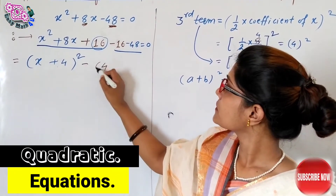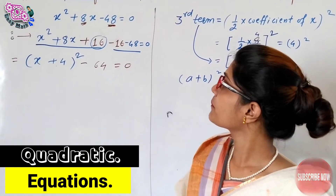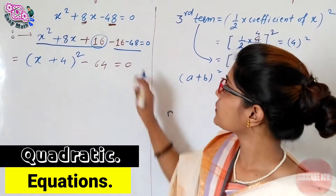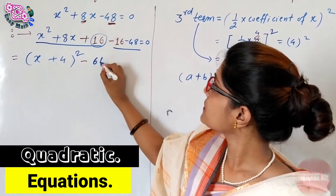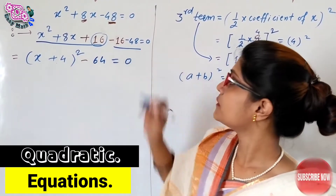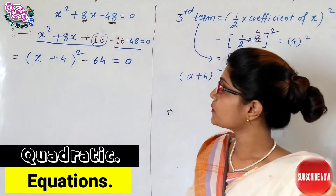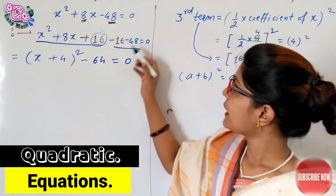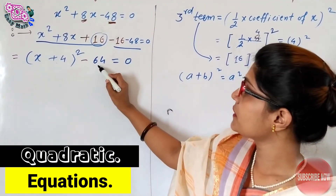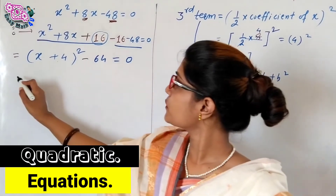Now handle the constant terms. We have minus 48 plus 16 minus 16. The remaining constants simplify: minus 48 minus 16 equals minus 64. So the equation becomes (x + 4)² minus 64 equals 0.